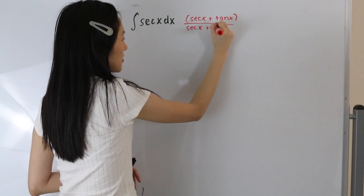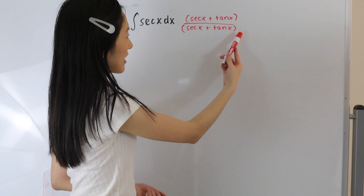And we can do this because if we multiply the numerator and the denominator by the same thing, it's the same thing as multiplying by 1.